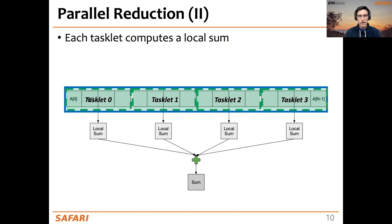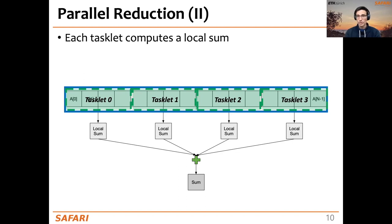Another important workload we discussed is the parallel reduction, a key primitive for parallel programming. We implement it by assigning parts of the input array to different tasklets on each DPU, obtaining local sums, and then performing a final reduction of those local sums using either a single tasklet or multiple tasklets in a tree-based reduction — either barrier-based or handshake-based.